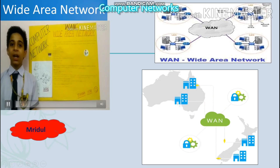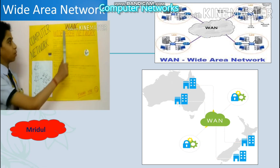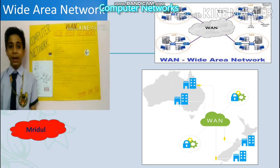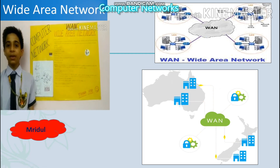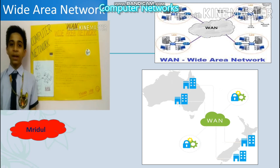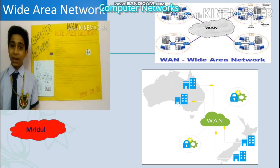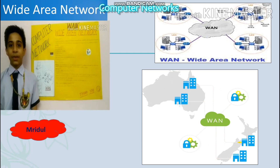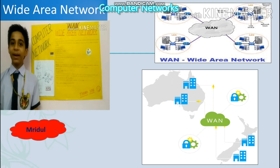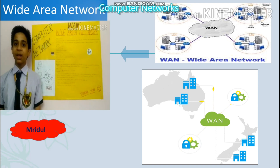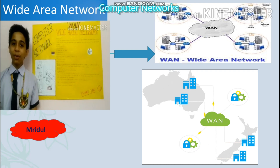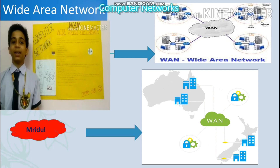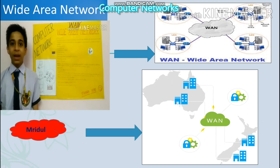I am Radul Krishnagarwal of Standard 8 and I am going to explain WAN. WAN stands for Wide Area Network. It is the largest computer network that connects the whole world, and is larger than both LAN and MAN. The Internet is the best example of a Wide Area Network. Figure 1 flashing on screen shows that the structure of WAN consists of many LANs, and figure 2 shows that we can connect to any place in the world using WAN.